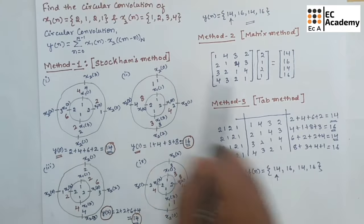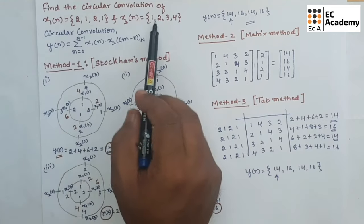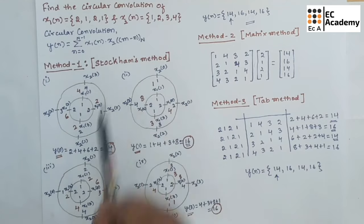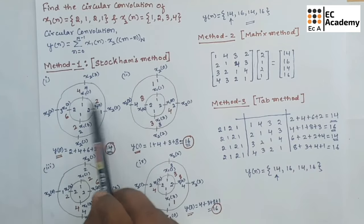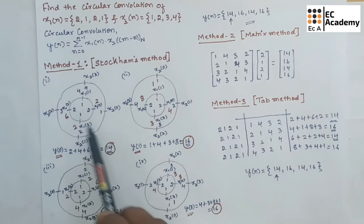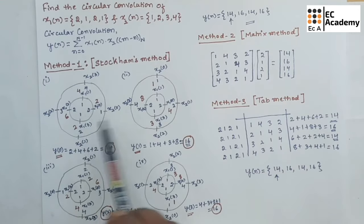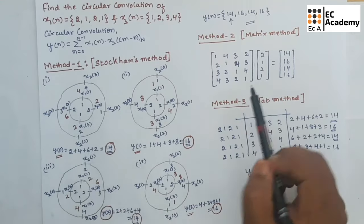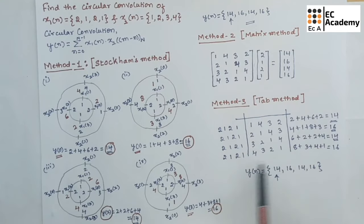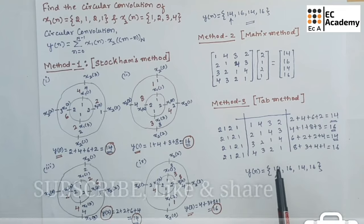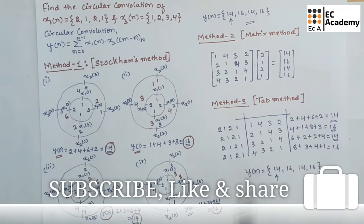You can follow the same methods for an 8-point sequence — divide the circle into 8 parts for the first method, write the matrix form for the second, or use the tab method for the third. This is about the problem on circular convolution. Hope you have understood the topic. Thank you.